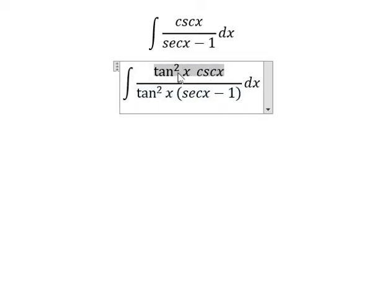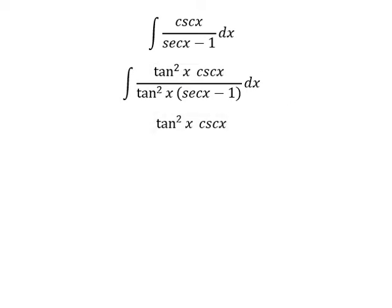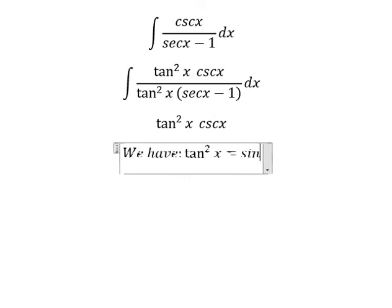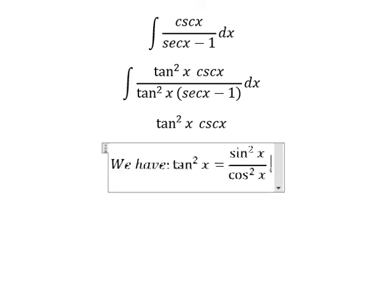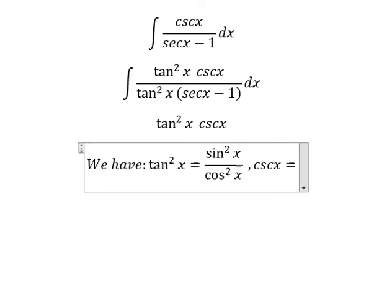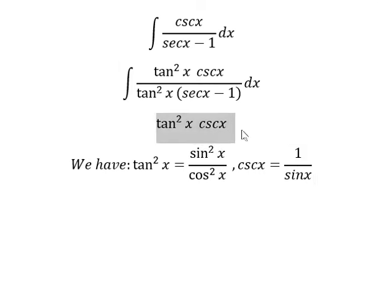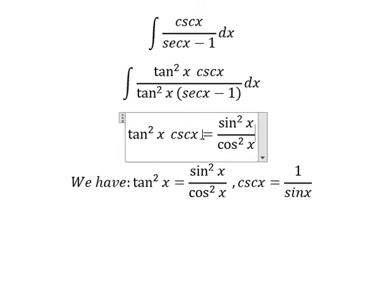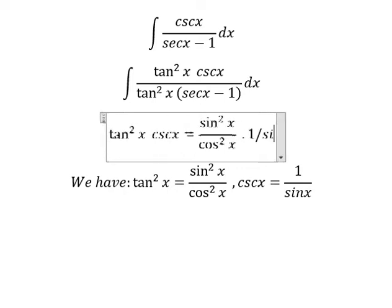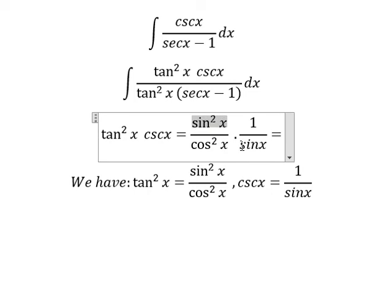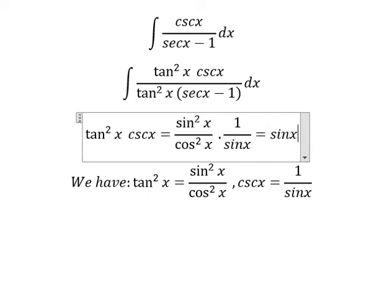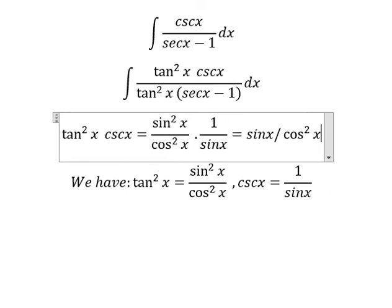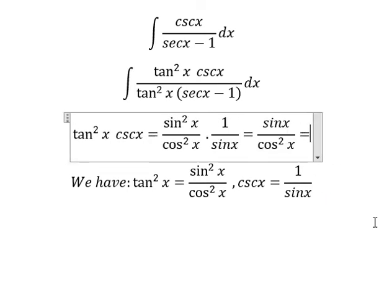Next, we need to consider this. We have tan x squared equals sine x squared over cos x squared. Cosecant of x equals 1 over sine x. So we will change this by sine x squared over cos x squared. Cosecant of x is 1 over sine x, so sine x simplifies with sine x.